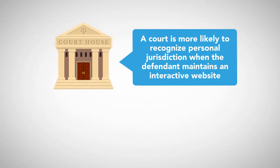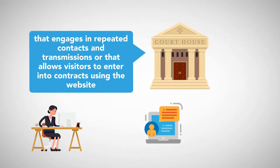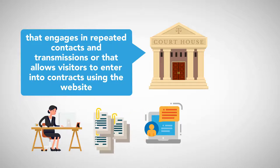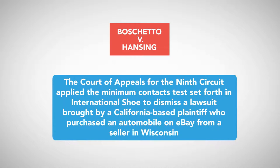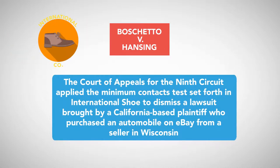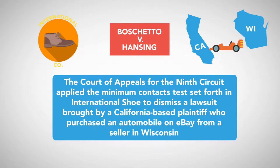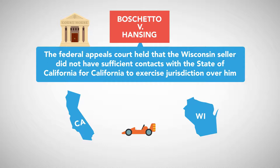A court is more likely to recognize personal jurisdiction when a defendant maintains an interactive website — one that engages in repeated contacts and transmissions, or that allows visitors to enter into contracts using the website. For example, in Bechetto v. Hansing, the Court of Appeals for the Ninth Circuit applied the minimum contacts test set forth in International Shoe to dismiss a lawsuit brought by a California-based plaintiff who purchased an automobile on eBay from a seller in Wisconsin. The federal appeals court held that the Wisconsin seller did not have sufficient contacts with the state of California for California to exercise jurisdiction over him.